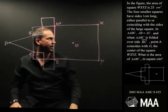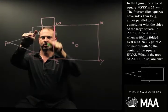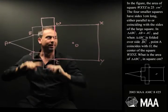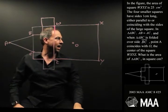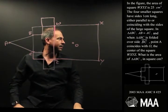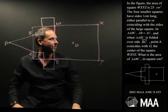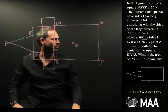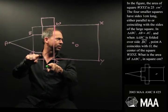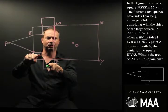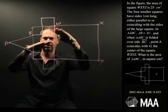The four smaller squares — I guess these ones, 1, 2, 3, 4 — have sides 1cm long, and the sides are either parallel to or coinciding with the sides of the large square. So basically everything is horizontal and vertical.